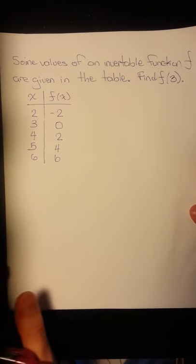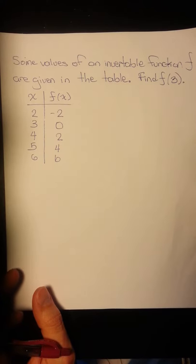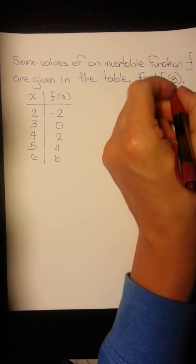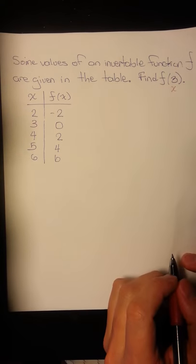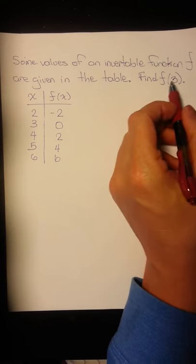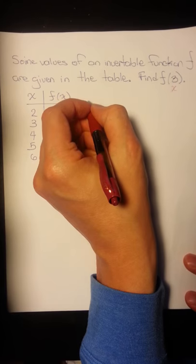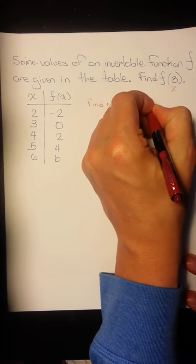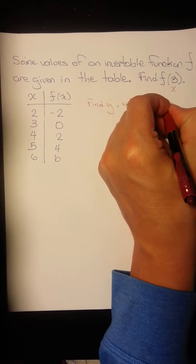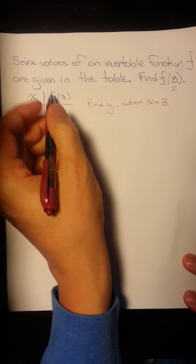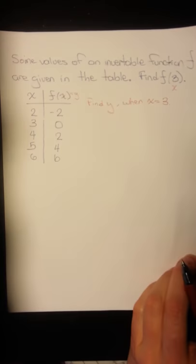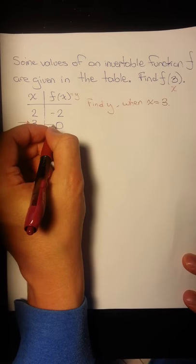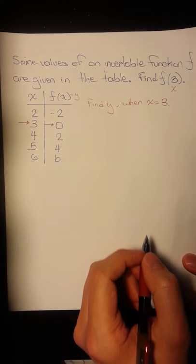Some values of an invertible function f are given in the table. Find f of 3. Here we have the table — we're looking at x equals 3. Finding f of 3 is the same as finding y when x equals 3, since f of x can be thought of as y. So when x is 3, the output value y is 0.